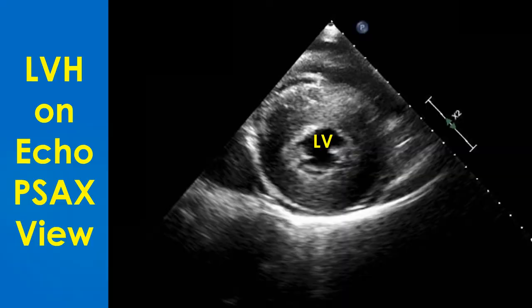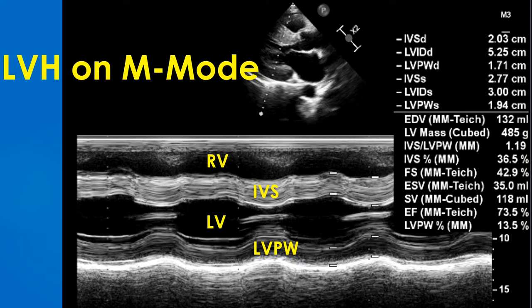Parasternal short axis view at the level of the papillary muscles showing severe concentric left ventricular hypertrophy. Serial short axis views have to be obtained and maximal thickness documented when assessing hypertrophic cardiomyopathy for risk profile.